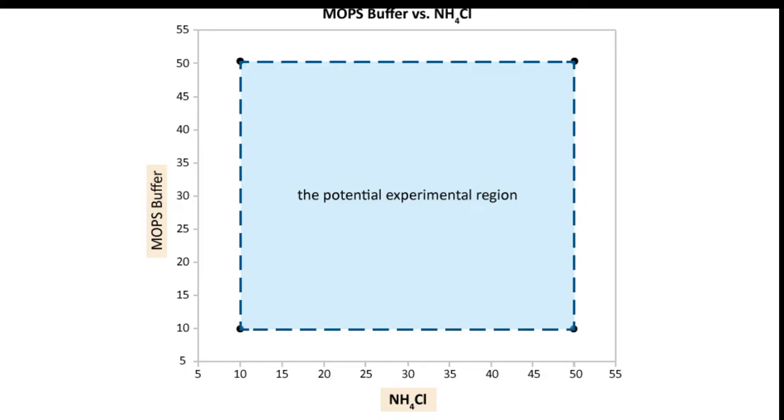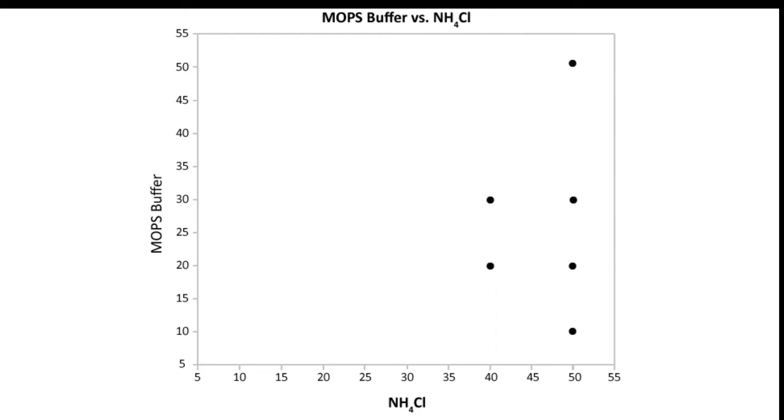When you experiment using trial and error, your design after the fact might look like this. Notice that none of the trials were conducted at low values of both buffer and ammonium chloride, and none of the trials were run near the optimum conditions.